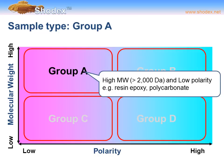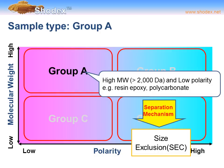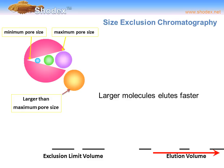These sample groups help us determine which type of separation is best. For group A — high molecular weight, low polarity — typical examples include resin epoxy and polycarbonate. These are polymers with very low polarity. The best separation mechanism is size exclusion chromatography, often abbreviated SEC.